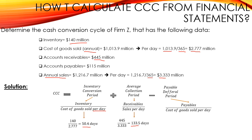And finally, the payable deferral period, which is the payables over the cost of goods sold per day. So accounts payable $115 million over $2.777 million is equal to 41.4 days — the company needs 41.4 days to pay its suppliers. As a result, the CCC is equal to 50.4 plus 133.5 minus 41.4 days, giving a CCC of 142.5 days.